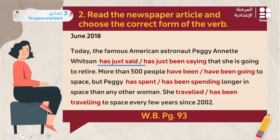'More than 500 people have been / have been going to space.' More than 500 people went to space — this is a past experience without a specific time mentioned. The action is completed, so we use the present perfect: the answer is 'have been.'